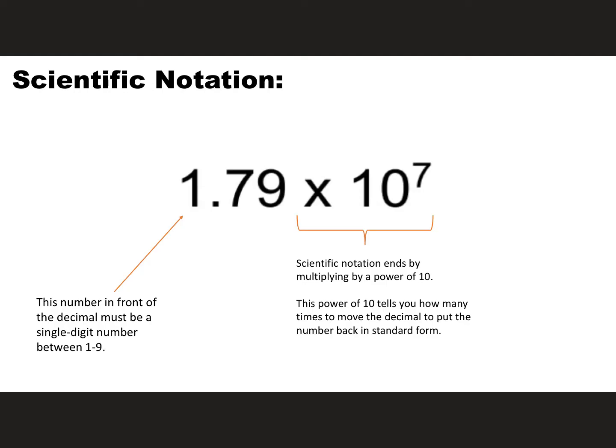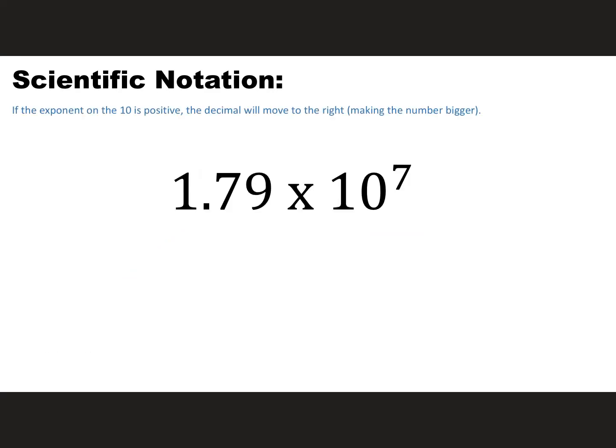The power of 10 is going to tell you how many times you move the decimal to put the number back in standard form, and that's actually what we're going to start with. If the exponent on the 10 is positive, you're going to move the decimal to the right, making the number bigger.